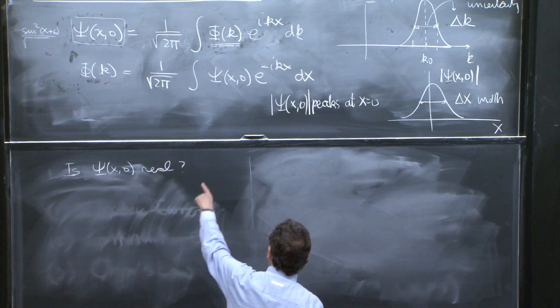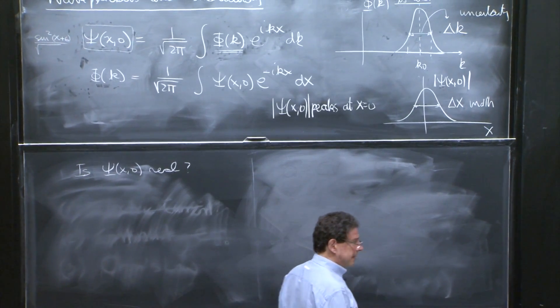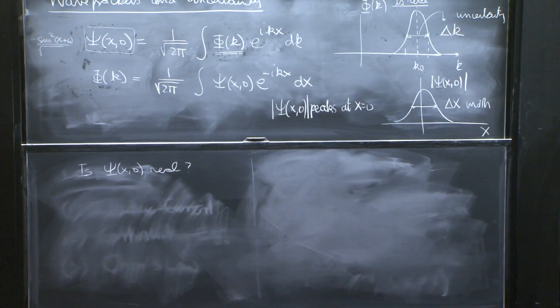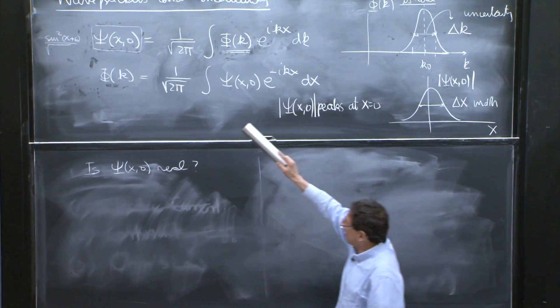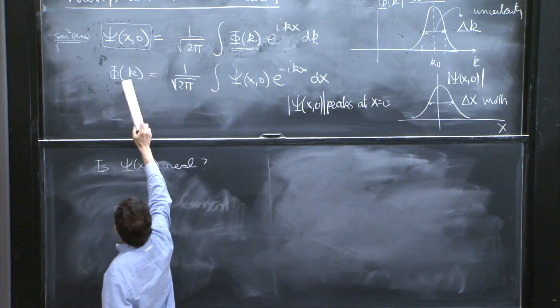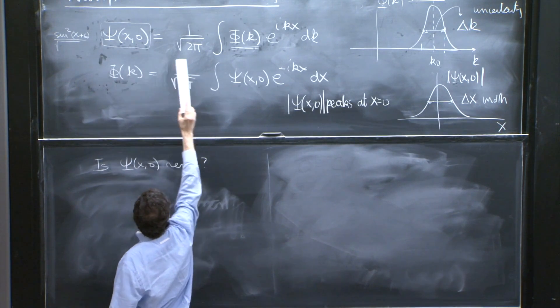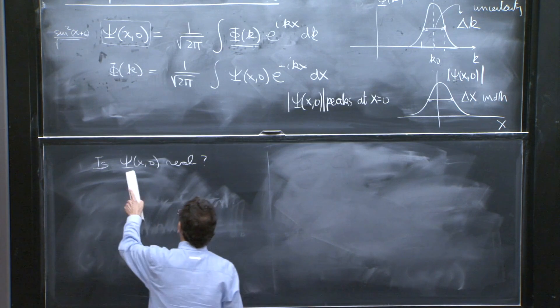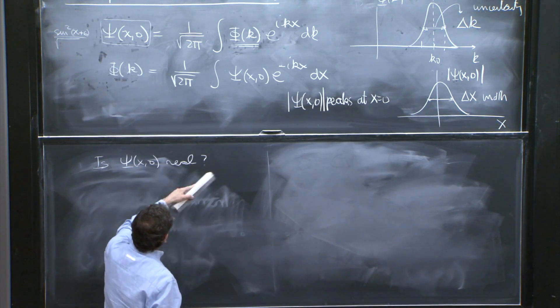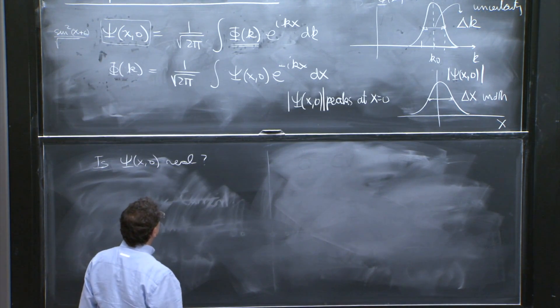We can take the complex conjugate. And at the end of the day, this will boil down to some property of phi of k. You have an expression for psi of x in terms of phi of k, so it would not be surprising that the requirement that psi is real means something about phi of k.